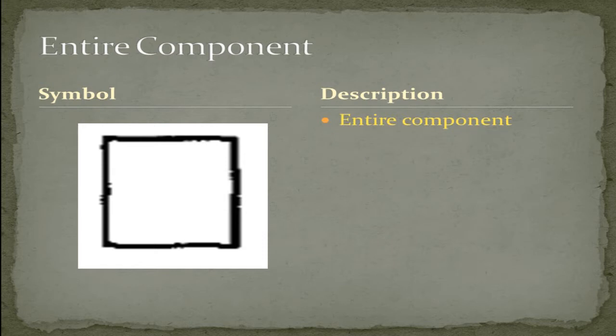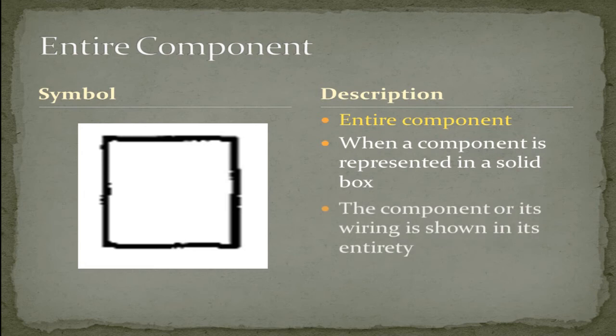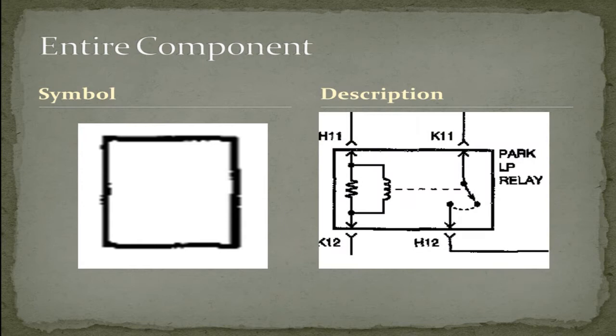The entire component. When a component is represented in a solid box, the component or its wiring is shown in its entirety. As illustrated here with the park lamp relay. That's a complete component. Therefore, it's represented in a solid square box.